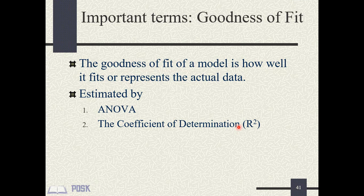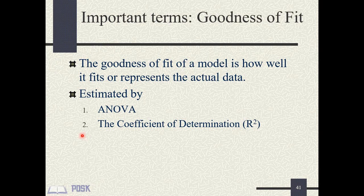Goodness of fit is the second important term — it shows how well the model fits the data. SPSS provides two methods to determine goodness of fit. ANOVA determines if the model is useful: if significant, the model is statistically useful; if not significant, you should jettison the model. The coefficient of determination, R-squared, is the percentage of variance in the outcome accounted for by the model. It is a measure of effect size.